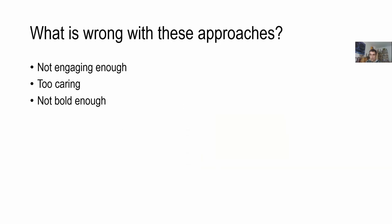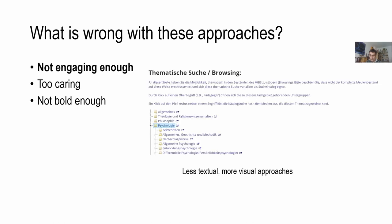I would like to say there is something wrong with these approaches. There are about three things: they are not engaging enough, they are a bit too caring, and they are sometimes not bold enough. The browsing functionality based on classification is often very textual, and there are not many good visual approaches — it is not inviting users to go through a very comprehensive list of subject headings.